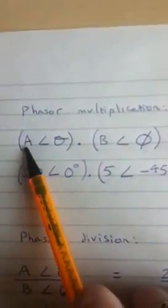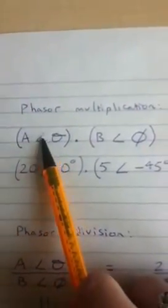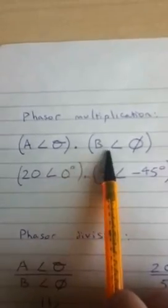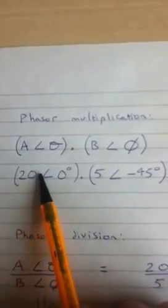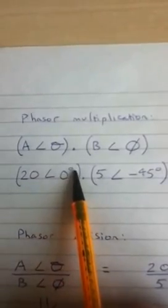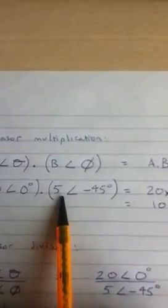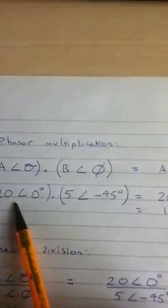So the main thing to do is phasor multiplication. This is the situation where we have some magnitude at an angle multiplied by another magnitude at another angle. So I've just chosen an example. I've got a magnitude of 20 at an angle of 0 degrees multiplied by a second phasor, which is a magnitude of 5 at an angle of minus 45 degrees. So how do we solve this?